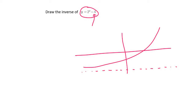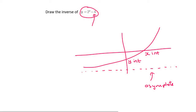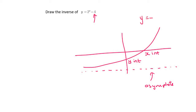What we do need to make sure that we find is the asymptote, the x-intercept — if there is one, sometimes there isn't for these graphs — and then a y-intercept. The asymptote is always this number over here, so that's going to be y equals negative 4. That will be our asymptote.